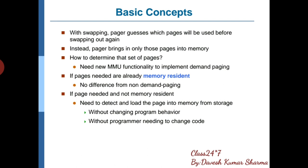यहाँ पर लिखा हुआ है need a new MMU functionality। MMU होता है memory mapping unit। That means memory mapping unit decide करता है कि कौन से pages को swap in कराना है। अगर कोई page memory resident है — memory resident का मतलब कि वो exist कर रहा है — तो हम लोग बोलते हैं कि yes वो page वहाँ पर है, demand paging की requirement नहीं है। लेकिन अगर वो page वहाँ exist नहीं कर रहा है तो demand paging की existence आ जाती है और वो lazy swapper को बोलता है कि जाओ, उस page को swap in करो और जिसकी requirement नहीं उसको swap out करा दो।